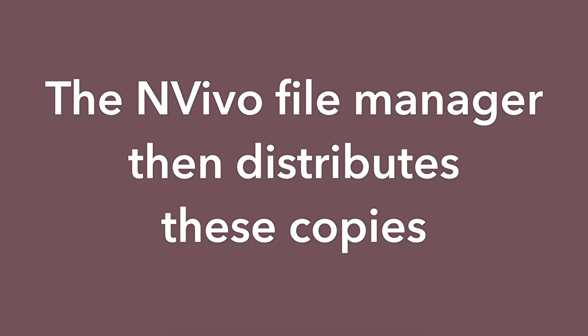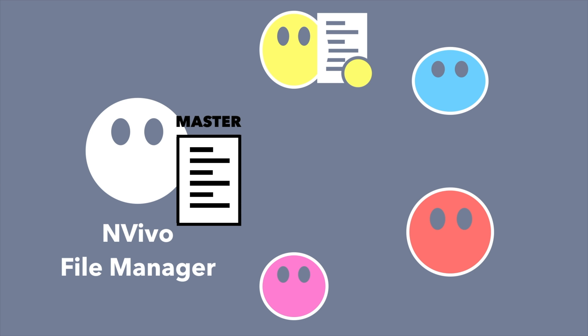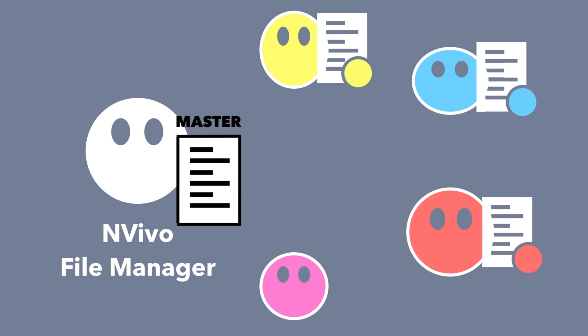If you have five coders on your project, every single person should have a file that has their initials on it and the date the copy was made, including the NVivo file manager. That leaves the original team file as a backup in case something goes sideways. The in vivo file manager then distributes copies to all coders, who download them — because the safest place to work on any NVivo project is on your hard drive, not the cloud.